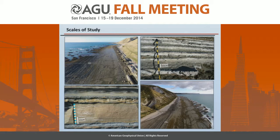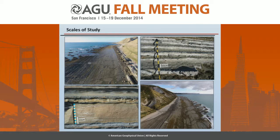To study these thin-bedded turbidites, we're interested in multiple scales of quantifying stratigraphic architecture. This starts at the centimeter scale — looking at very small structures and individual beds, and stacking patterns of how thin beds stack one on top of another — and then scales upward to lateral geometries of kilometers of available exposure that we have in New Zealand.